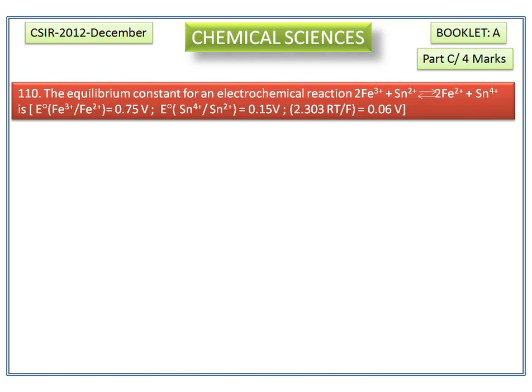The equilibrium constant for an electrochemical reaction. The options are given here. The given values are the standard reduction potential of Fe³⁺ to Fe²⁺ is 0.75 volt, and the standard reduction potential of Sn⁴⁺ to Sn²⁺ is 0.15 volt.